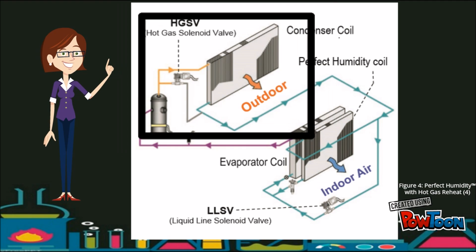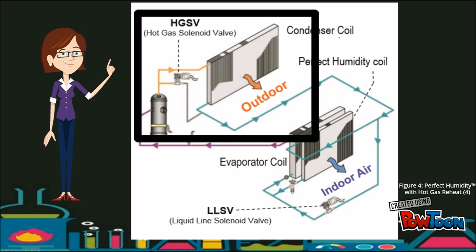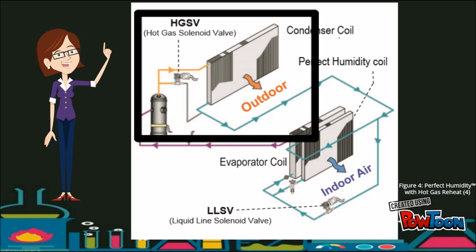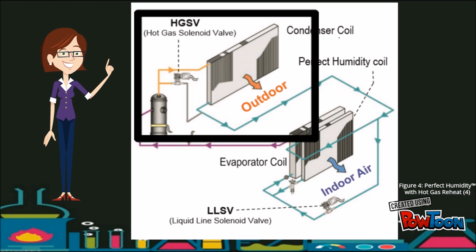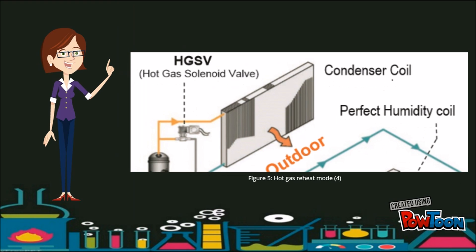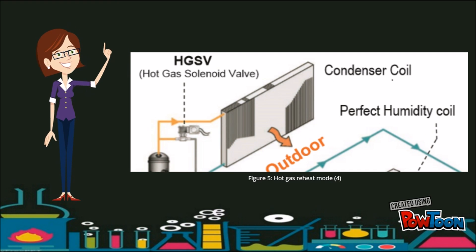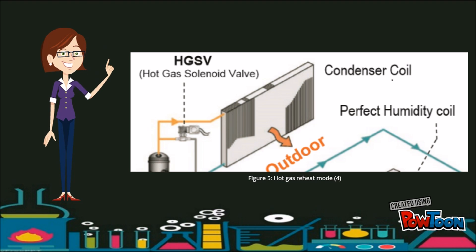At this point, it is mixed with the sub-cooled refrigerant leaving the condenser coil. This two-phase mixture is routed through the perfect humidity coil and then the evaporator. Additional sub-cooling occurs in the perfect humidity coil. When this refrigerant is fed into the evaporator, the result is a colder coil surface. The air is cooled and dehumidified as it flows across the evaporator.